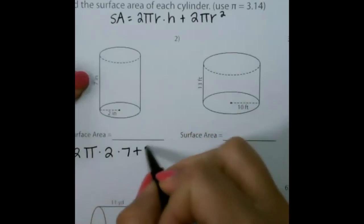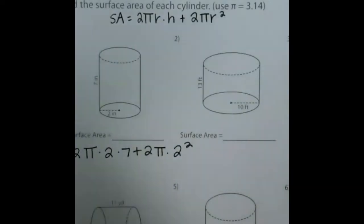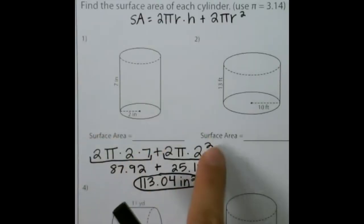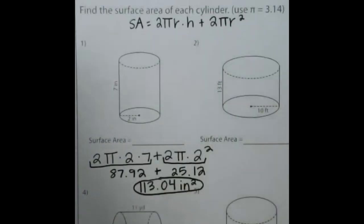So I plug in all of my numbers to my formula and simply solve. So again, with each number plugged in, I solve this half of the equation first to get this number, solve this half second, and then add those two numbers together to get our final answer of 113.04 inches squared. Remember to solve this and this separately so that you don't mix up using order of operations and get your answers mixed up.